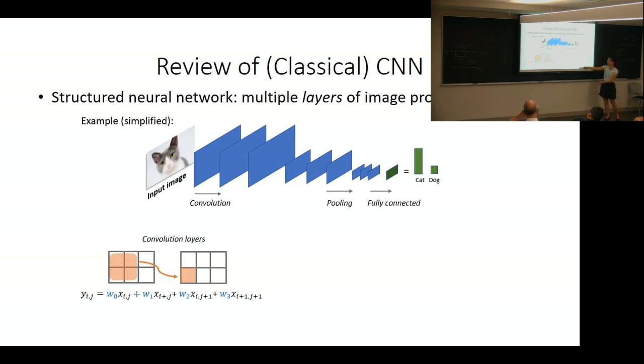The same weights are used across the entire image in a translation-invariant way to reduce the number of parameters you need to train.